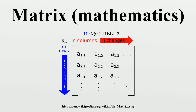For example, each of the entries of the following matrix A is determined by a_{i,j} equals i minus j. In this case, the matrix itself is sometimes defined by that formula within square brackets or double parentheses, e.g., A equals [i,j] or A equals (a_{i,j}). If matrix size is M times N, the formula f is valid for any i equals 1 to M and any j equals 1 to N. This can be either specified separately, or using M times N as a subscript. For instance, the matrix A above is 3 times 4 and can be defined as A equals [i minus j] or A equals [i minus j]_{3×4}.